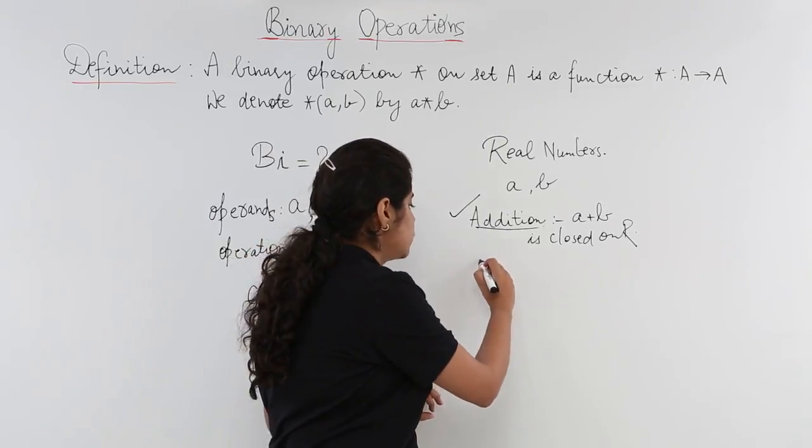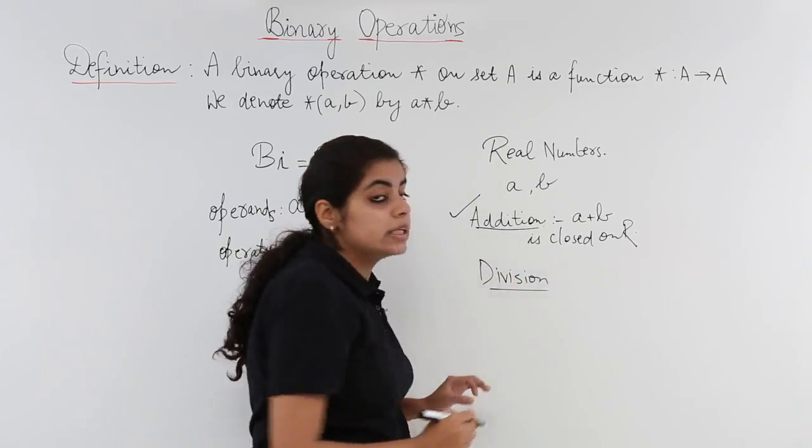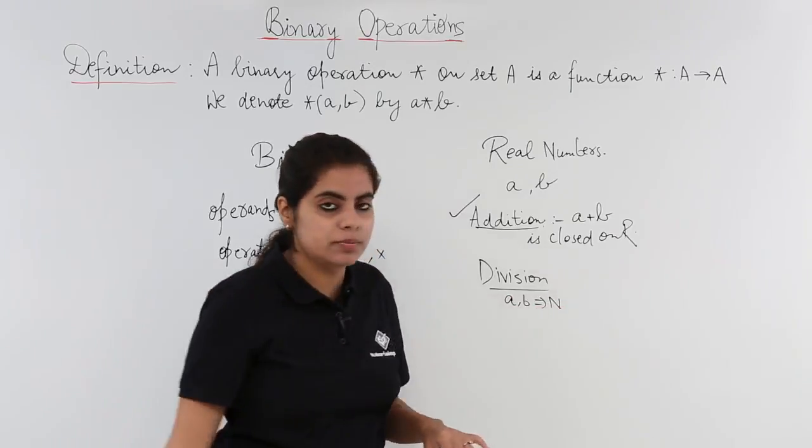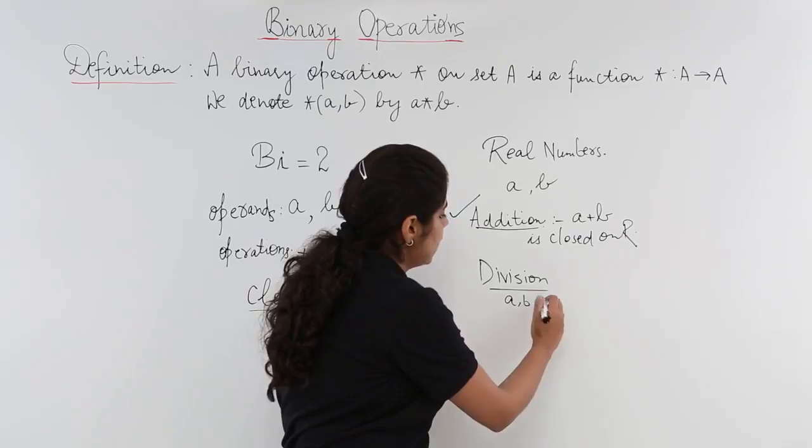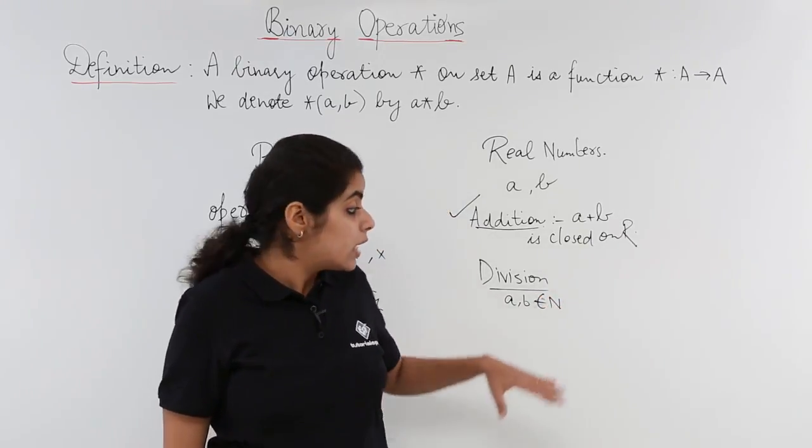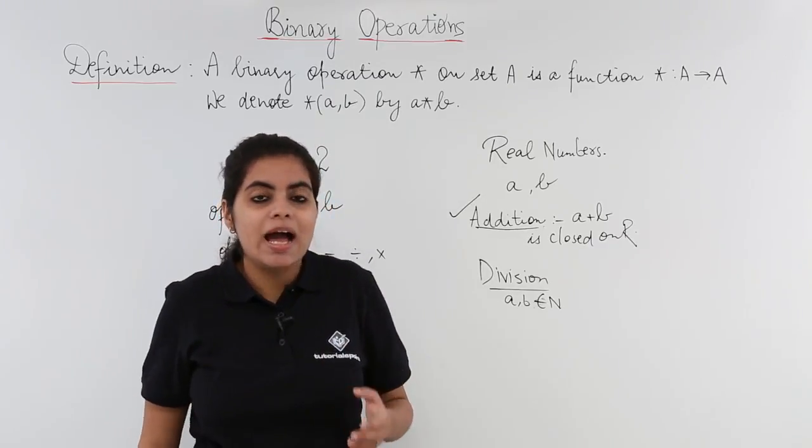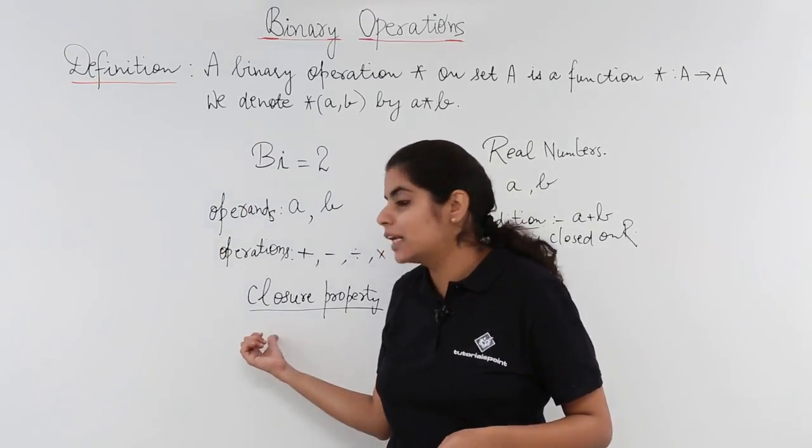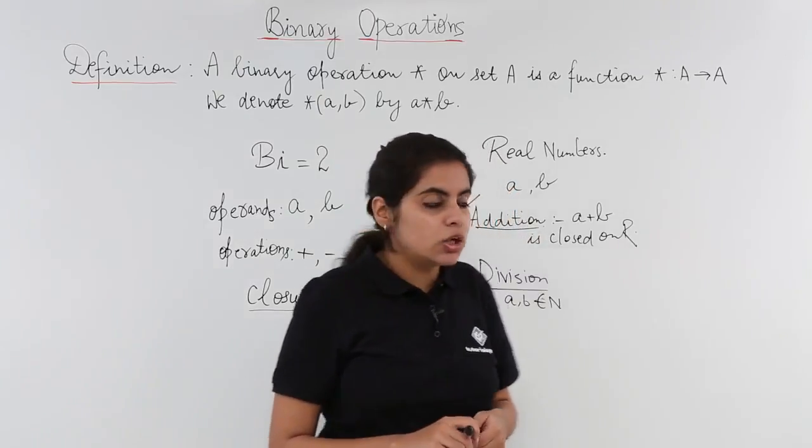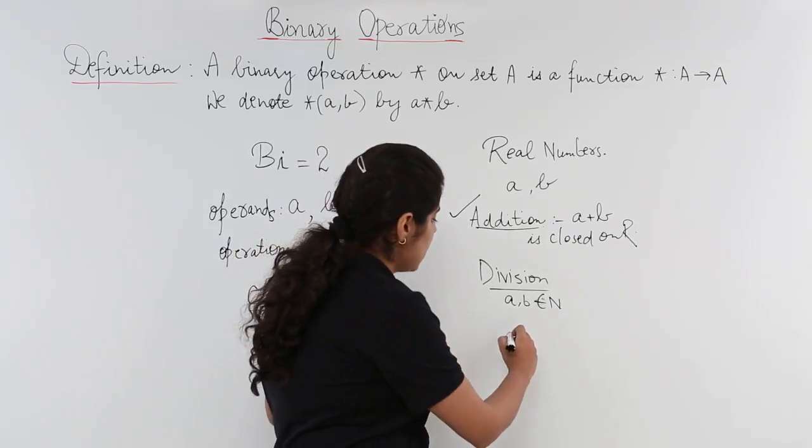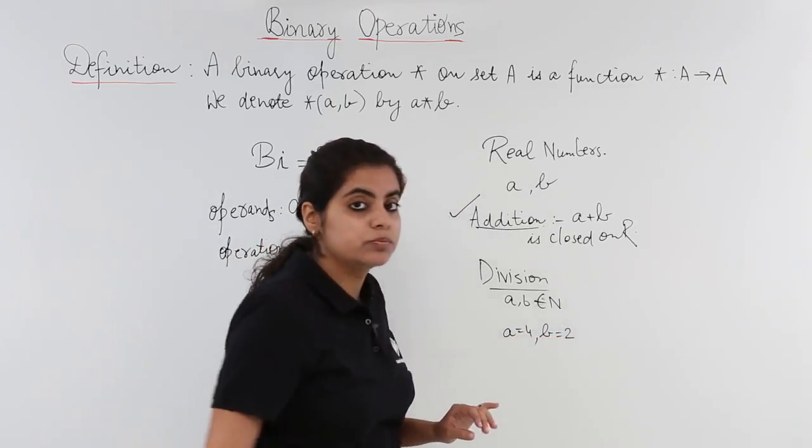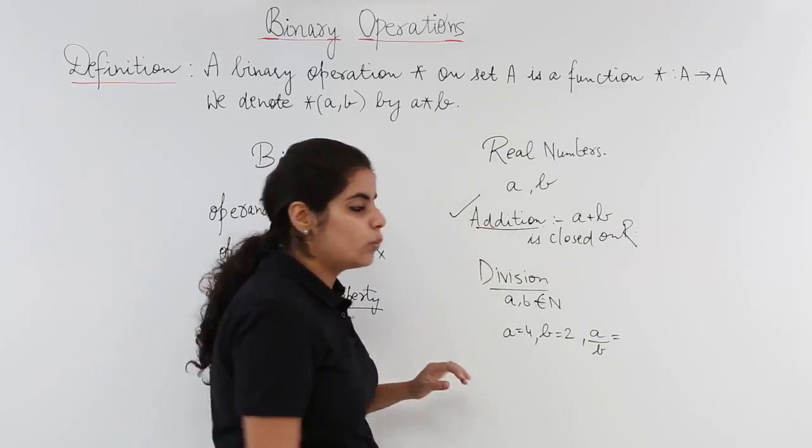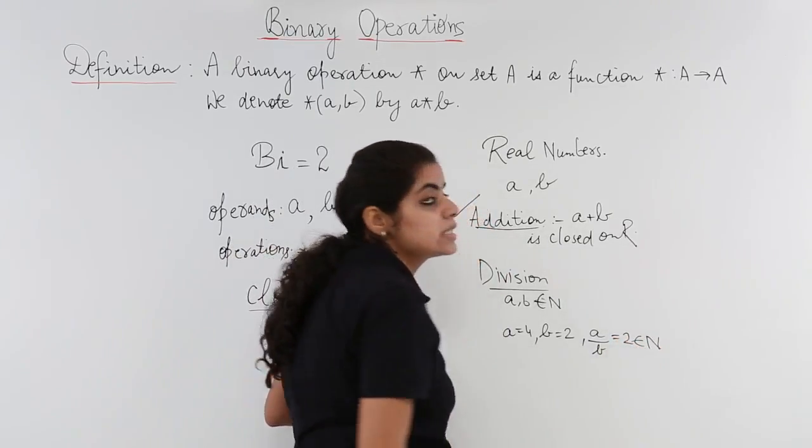Now let's check division operation where A and B are natural numbers. We have to check whether division is closed on natural numbers because we are studying closure property. Let me see this with an example. If A equals 4 and B equals 2, then A upon B is 4 upon 2, which is 2. Does 2 belong to natural numbers? Yes it does.